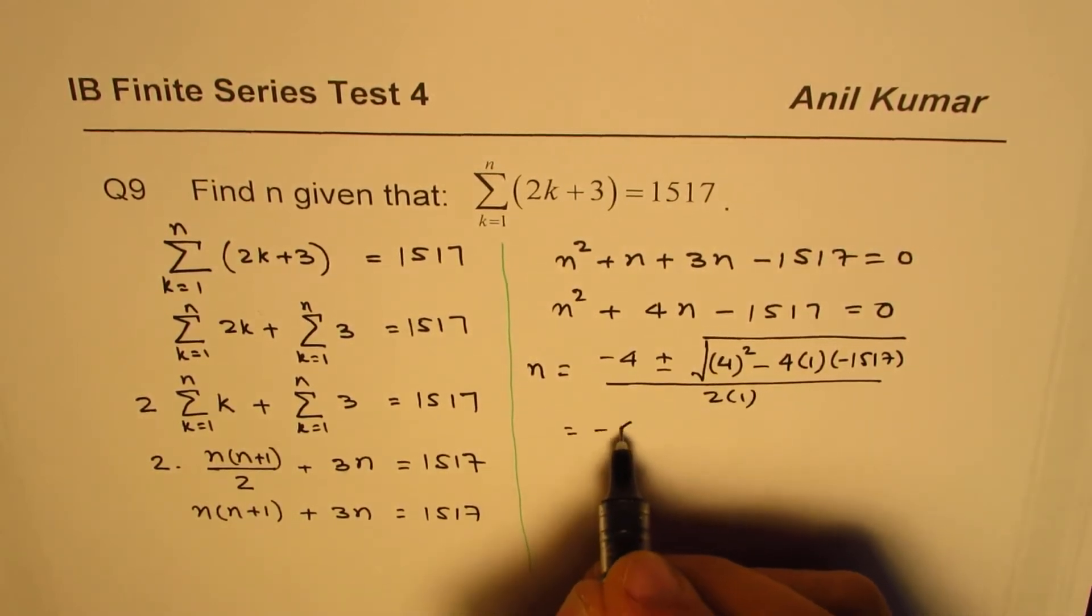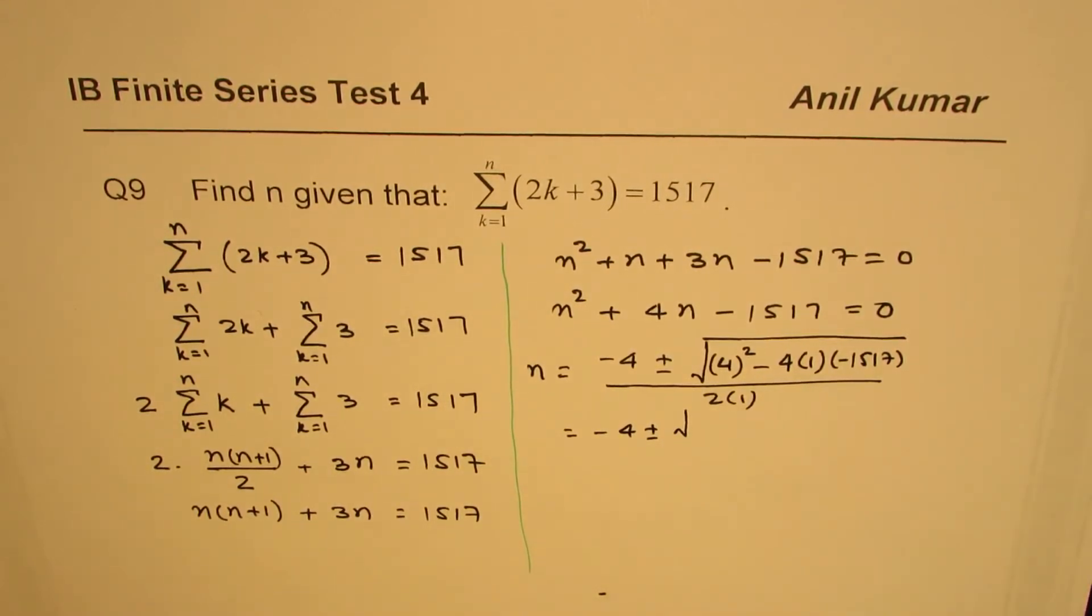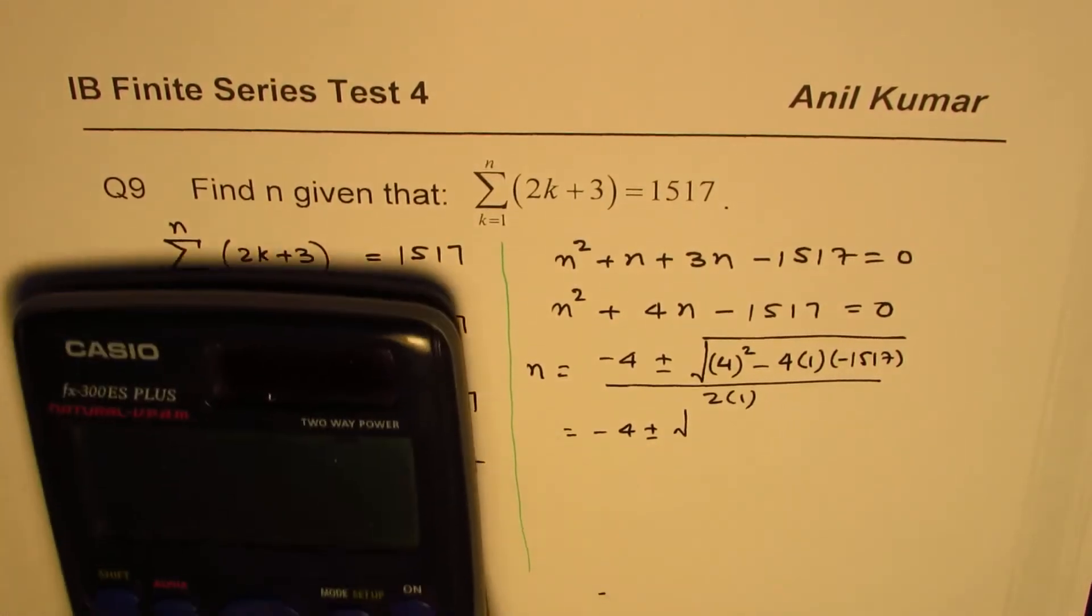So that is minus 4 plus minus square root. We can calculate this value. That becomes plus. So let's calculate this value.